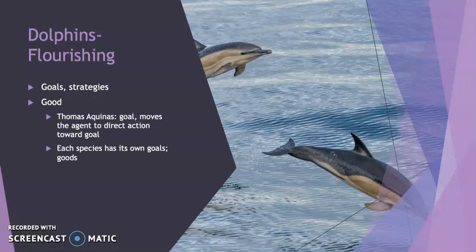The other reason we want to look at dolphins is because we can talk about dolphins flourishing. Flourishing is going to be the background for much of our discussion throughout this book. When we talk about human animals being independent practical reasoners, we're talking about human animals as flourishing. So if we want to understand our relationship to non-human animals, we want to understand what those non-human animals are doing when they're flourishing. Flourishing involves certain goals and strategies — pursuing certain kinds of goods. A good is simply what moves an agent to act. We might be mistaken about what those goods are, which is certainly more true of human animals than of non-human animal species.